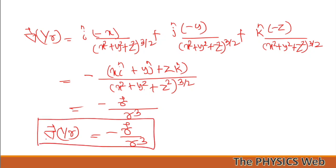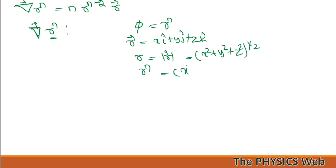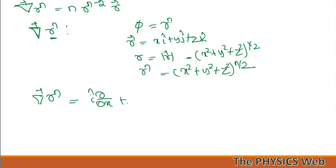The last problem: gradient of rⁿ = n·r^(n−2)·r-vector. We have to find the expression of gradient of rⁿ using the gradient in Cartesian coordinates. Here φ = rⁿ, where r = x·i-cap + y·j-cap + z·k-cap and |r| = (x²+y²+z²)^(1/2). So rⁿ = (x²+y²+z²)^(n/2). Therefore gradient of rⁿ = [i-cap (∂/∂x) + j-cap (∂/∂y) + k-cap (∂/∂z)] (x²+y²+z²)^(n/2).